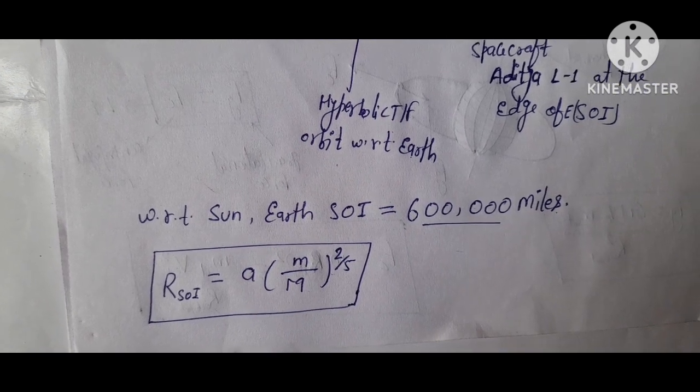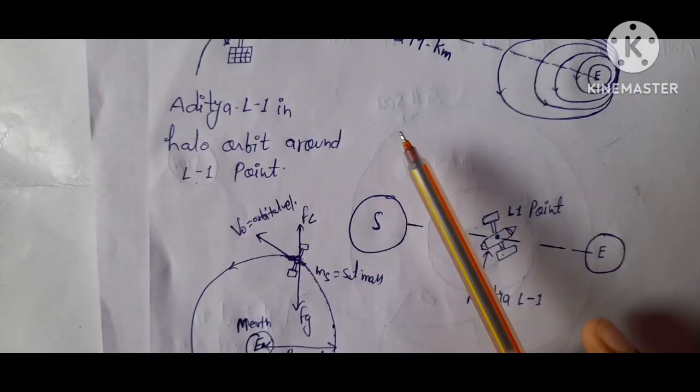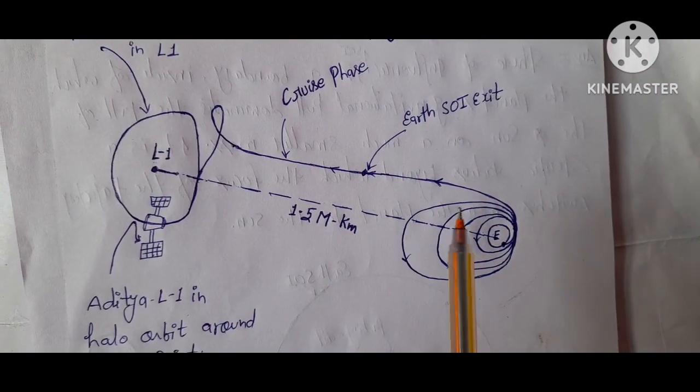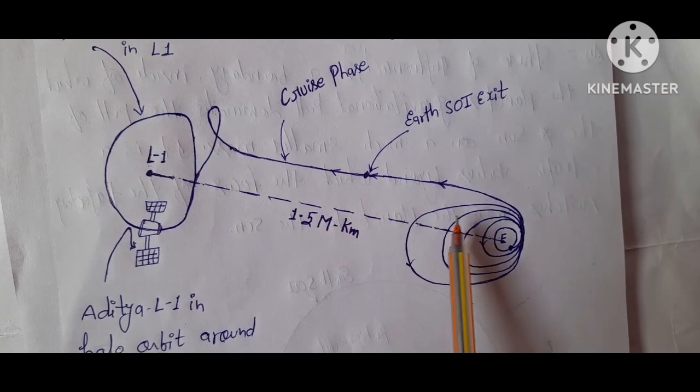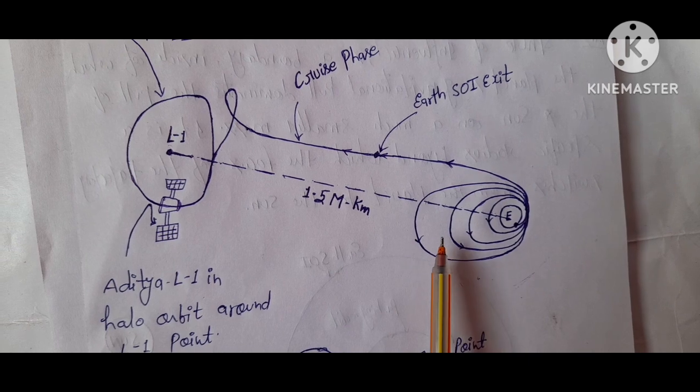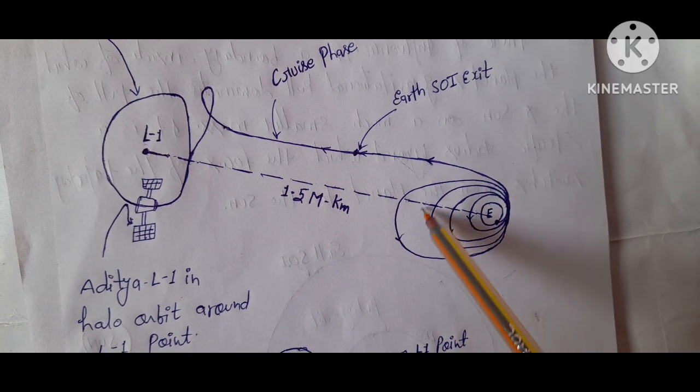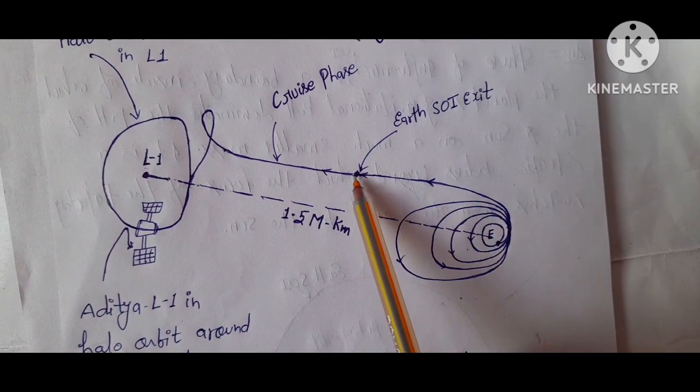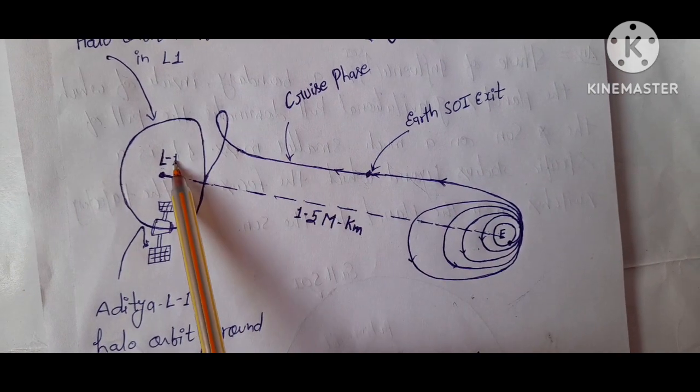Friends, in patch conic approximation, once an object leaves, according to patch conic approximation, you see in Aditya L1, once an object like planet leaves the other planets SOI in case of Earth, the primary or only gravitational influence is the big body. This is a planet and this is a big planet as compared to this and this is a Sun-heavy body. If this goes away from the Earth influence SOI, then it will go to Sun SOI.